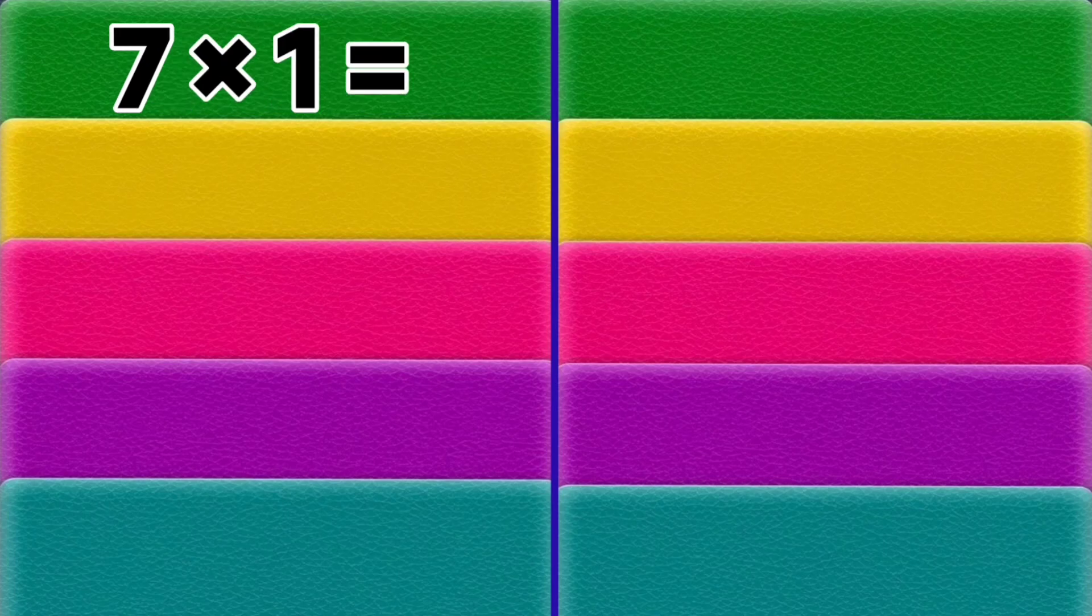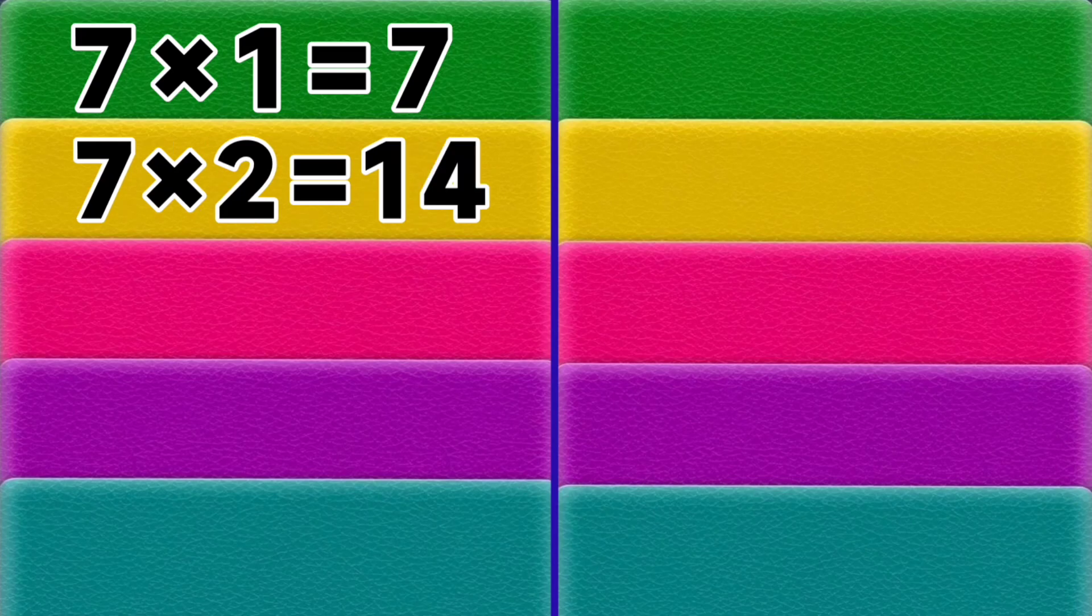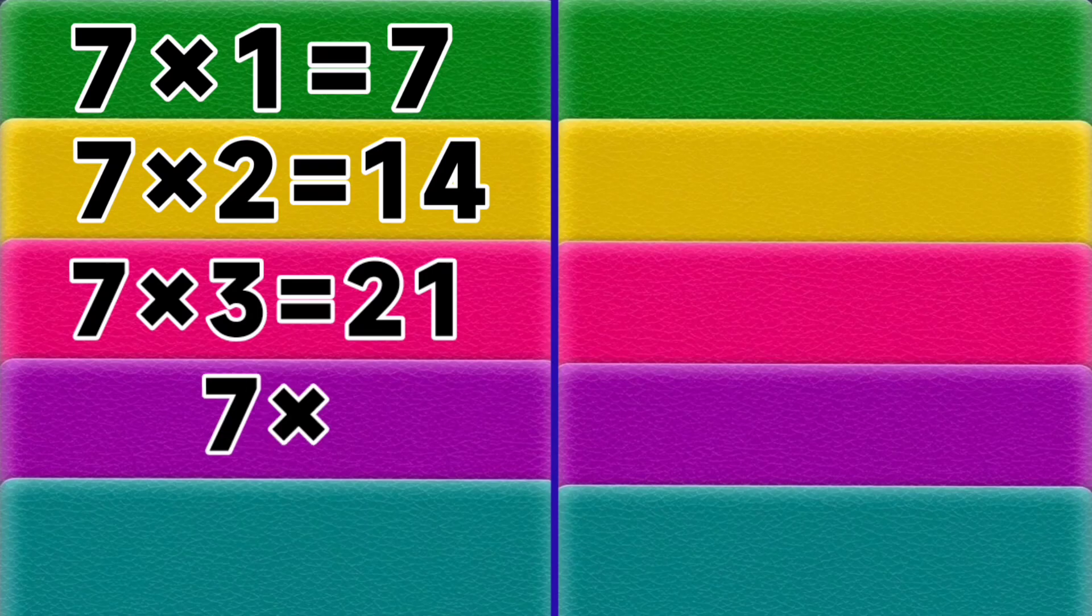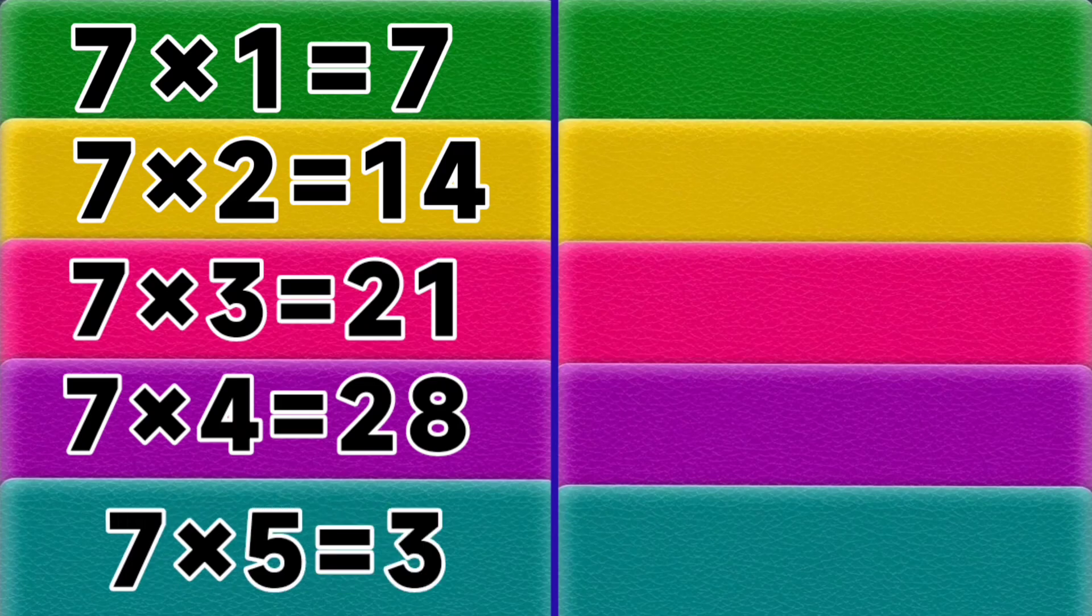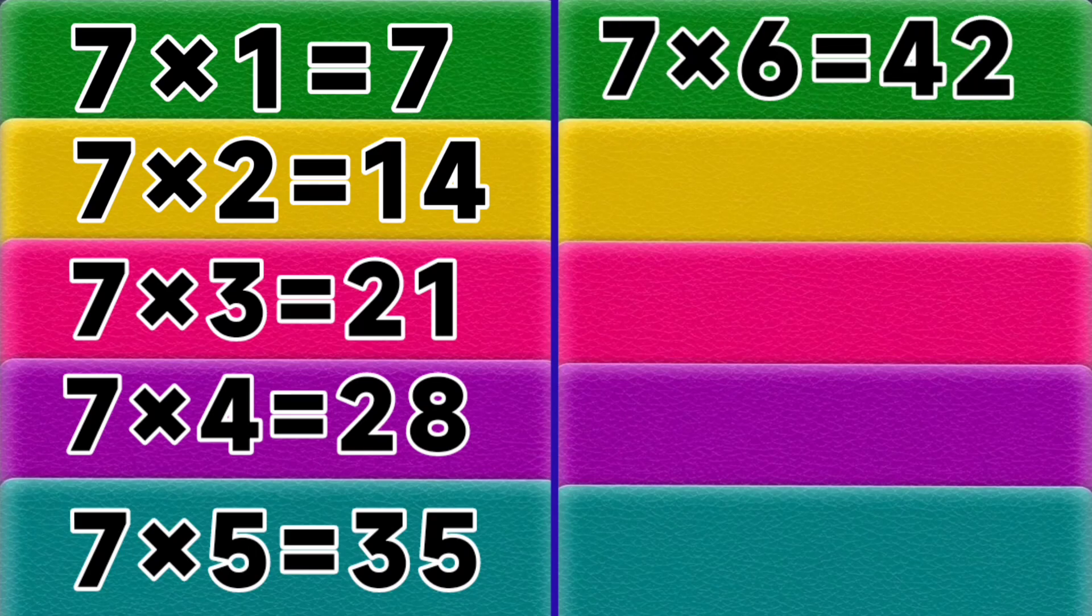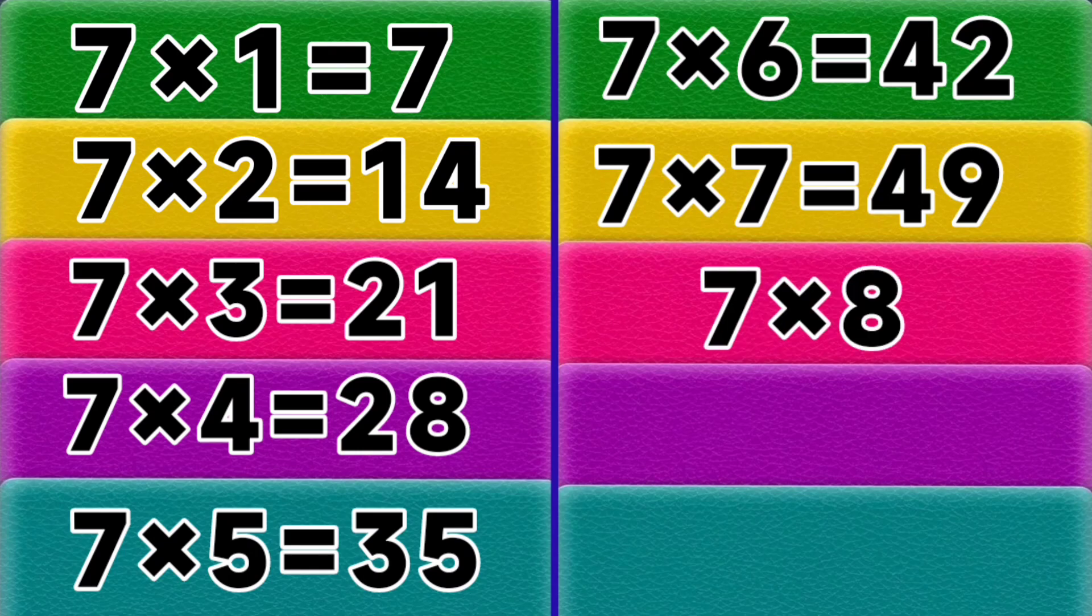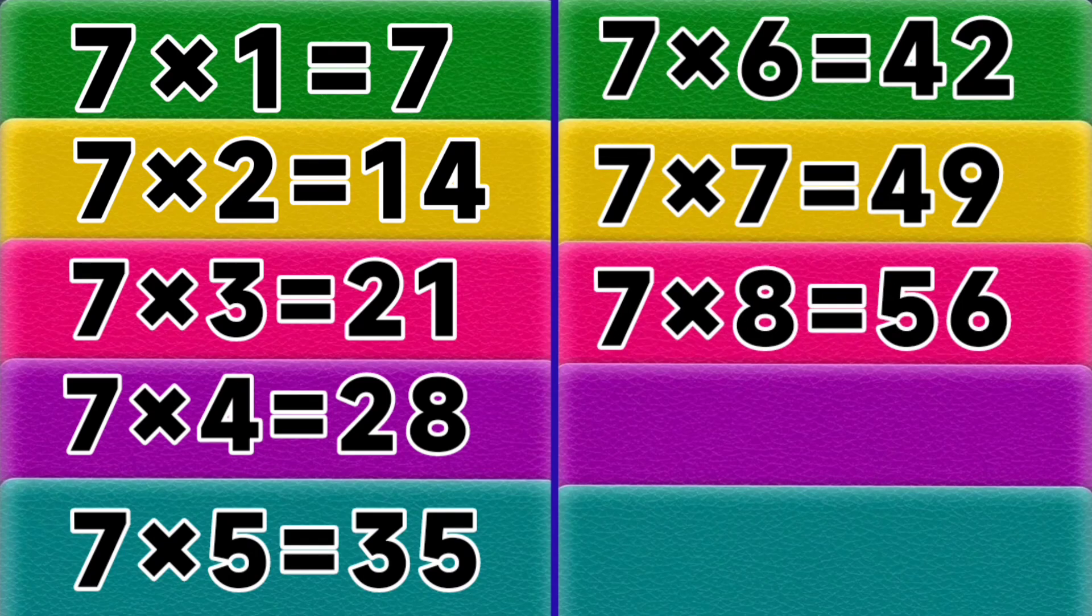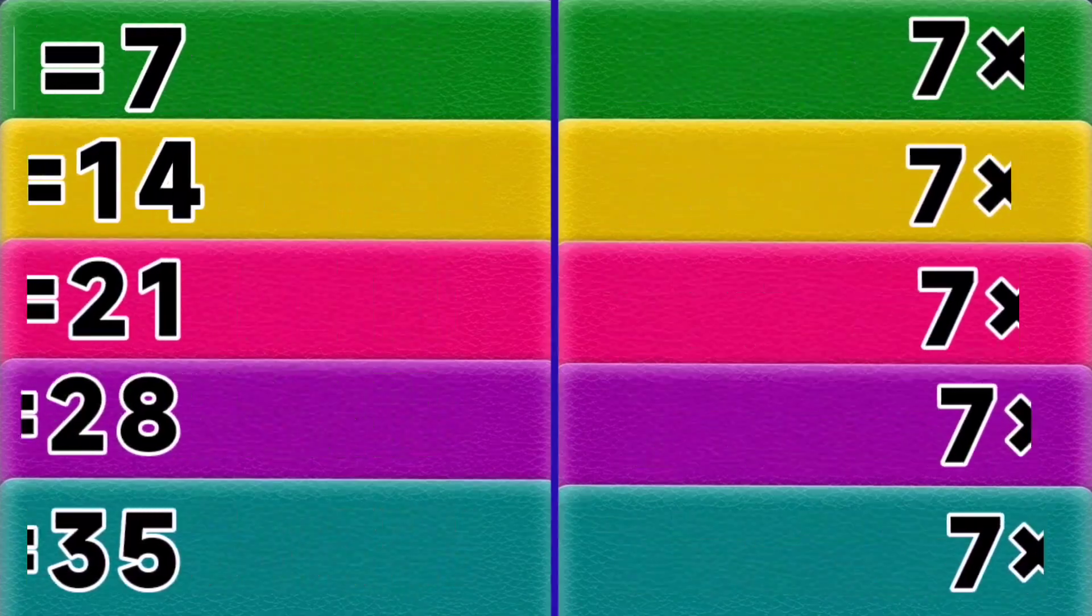7 ones are 7, 7 twos are 14, 7 threes are 21, 7 fours are 28, 7 fives are 35, 7 sixes are 42, 7 sevens are 49, 7 eights are 56, 7 nines are 63, 7 tens are 70. Table of 8.